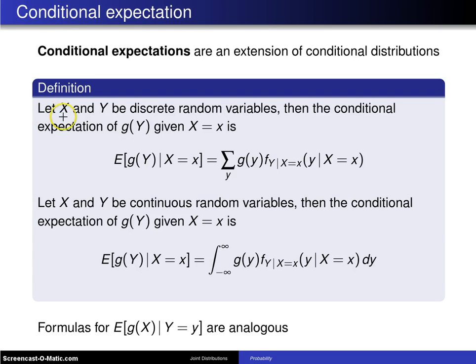The definition goes like this. Let X and Y be discrete random variables, then the conditional expectation of g(Y) given X equals little x